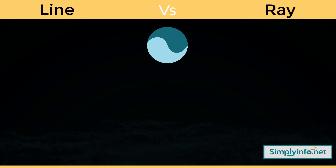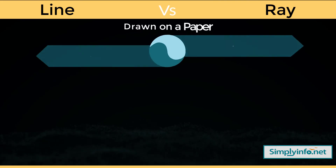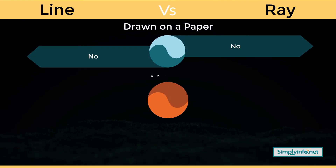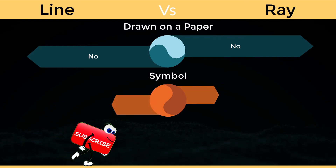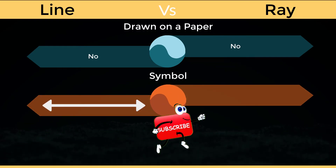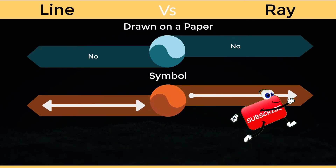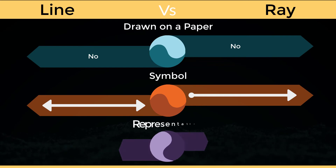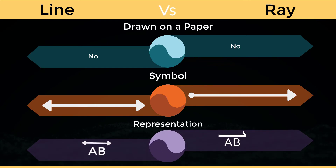Can a line be drawn on paper? No. Can a ray be drawn on paper? No. A symbol for a line and a symbol for a ray, along with their representations.